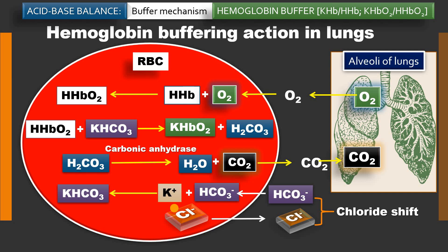This is the action of the hemoglobin buffer in the tissues and in the lungs. In the tissues it takes up carbon dioxide and unloads oxygen with the help of the bicarbonate buffer system and hemoglobin buffer system. In the lungs, oxygen is transported in the RBC as oxyhemoglobin and carbon dioxide — indirectly transported as bicarbonate from tissue metabolism — is released from the RBC into the lungs and expelled. This is the complete mechanism of the hemoglobin buffer in the tissues and in the lungs.